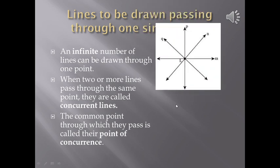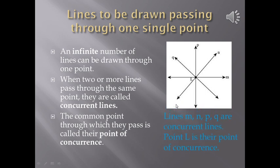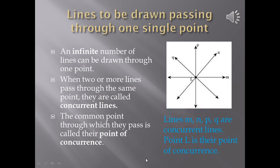In the given figure lines M, N, P and Q are concurrent lines. Point L is their point of concurrence.